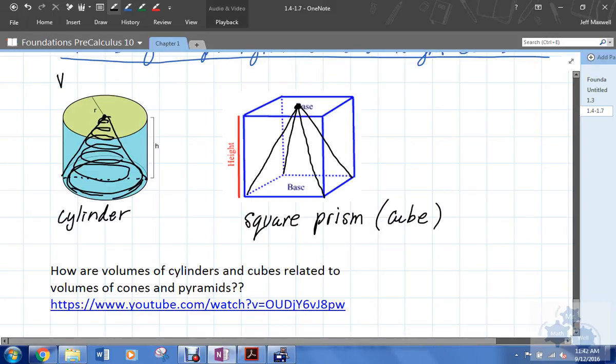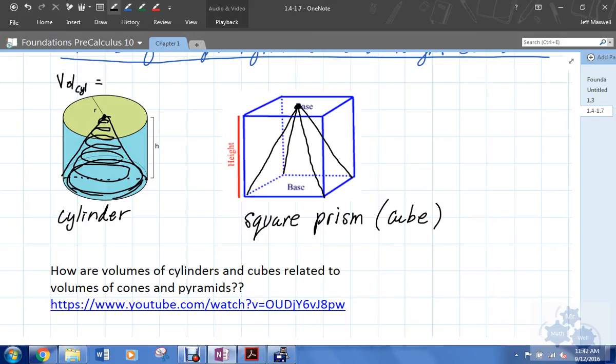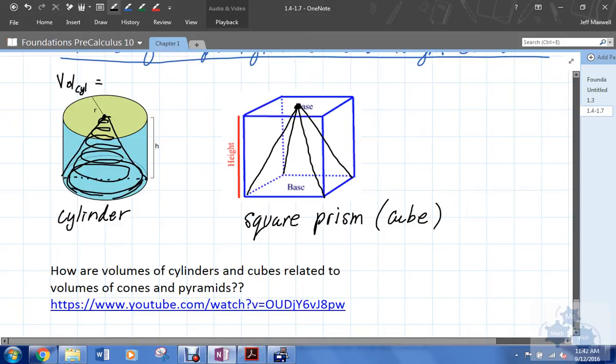Now, who remembers the volume of a cylinder? Who remembers the formula for the volume of a right cylinder like that? The volume of a cylinder is pi r squared, which is the area of the circular base, times the height.